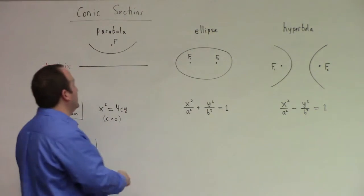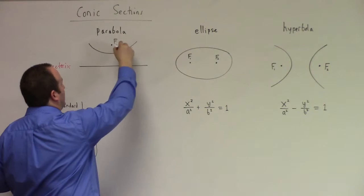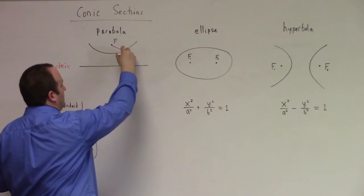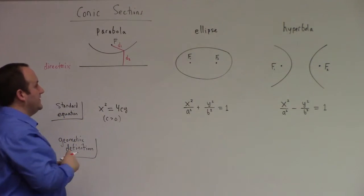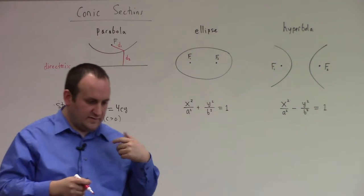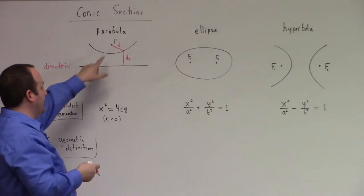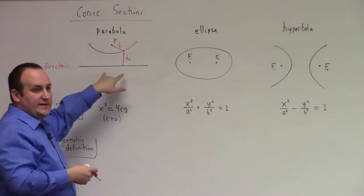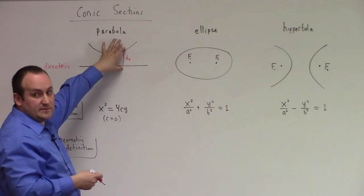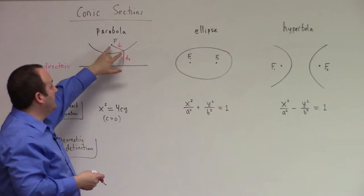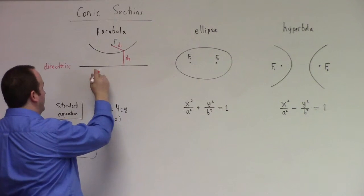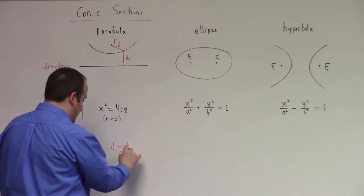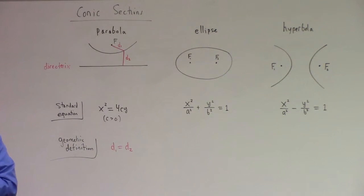Geometrically, there's a simple interpretation of every one of these. A parabola is the locus, the collection of all points which are equal distance from a focal point F and some directrix line down here. So the distance from a line is always defined to be the shortest distance.